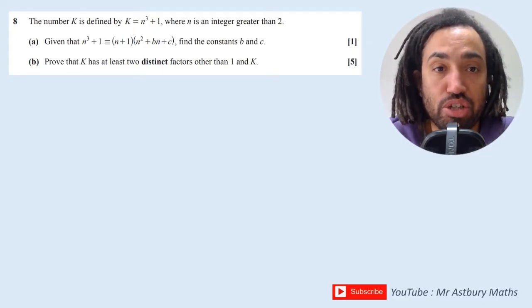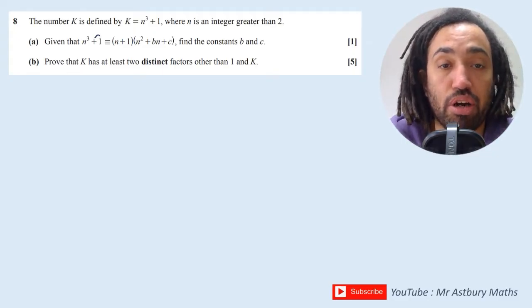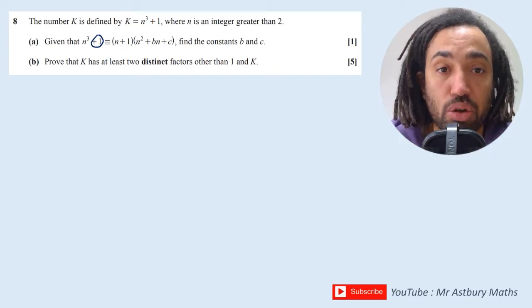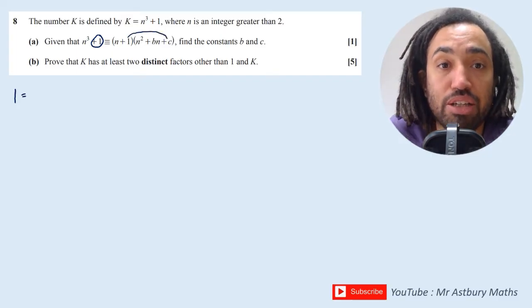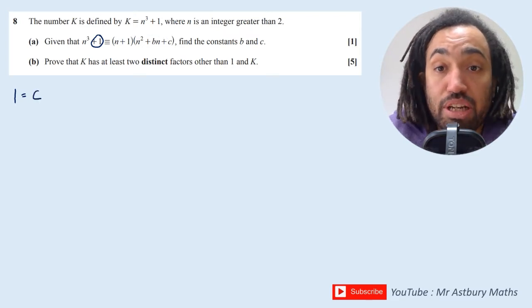So one mark should be fairly straightforward. What we're going to do is equate the constant term first. On the left side we have a 1 and on the right side we're going to multiply out the brackets. I will get 1 times c, so therefore 1 = c.